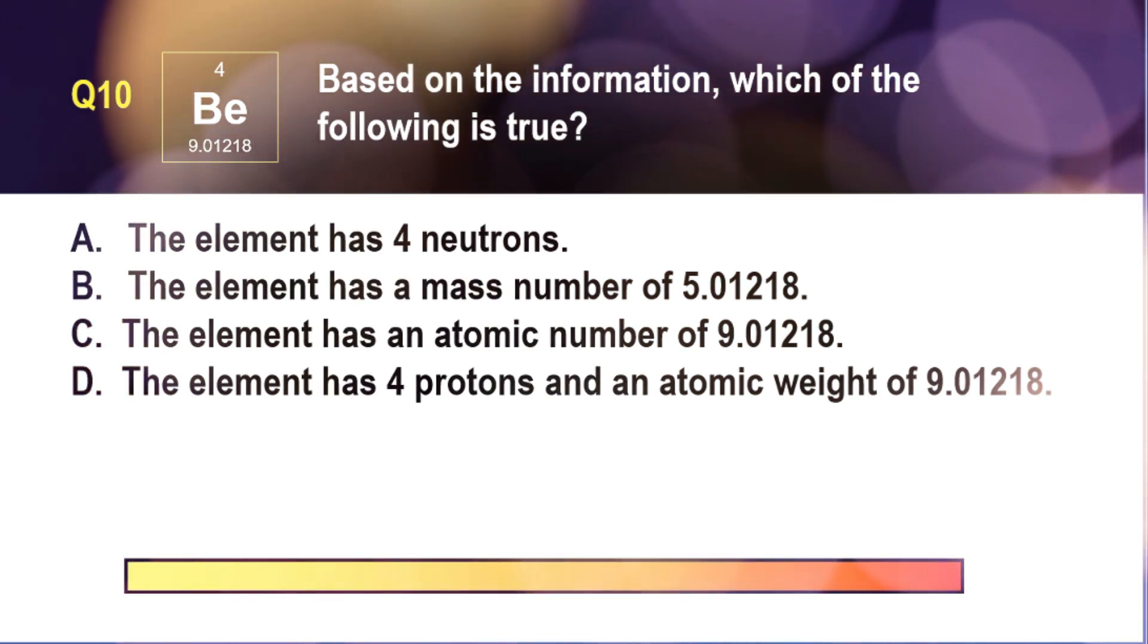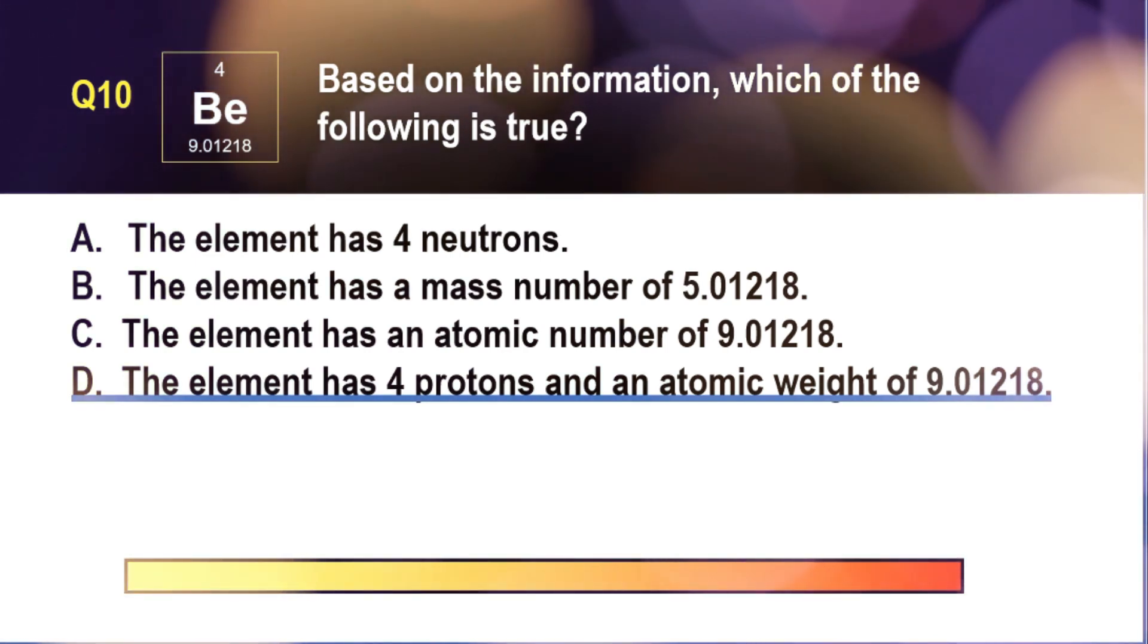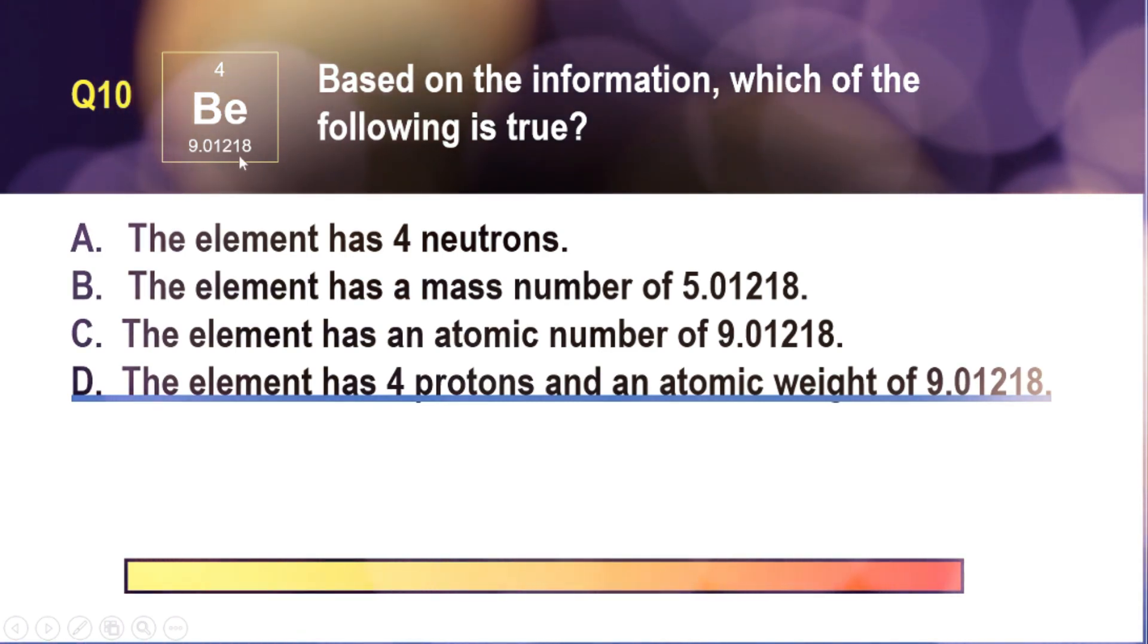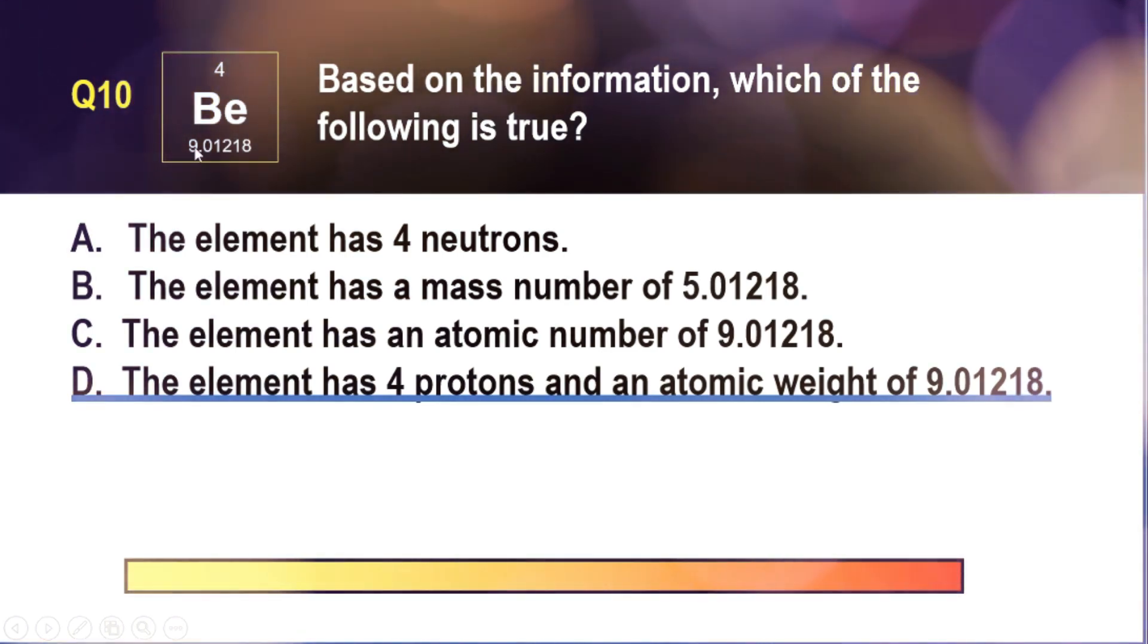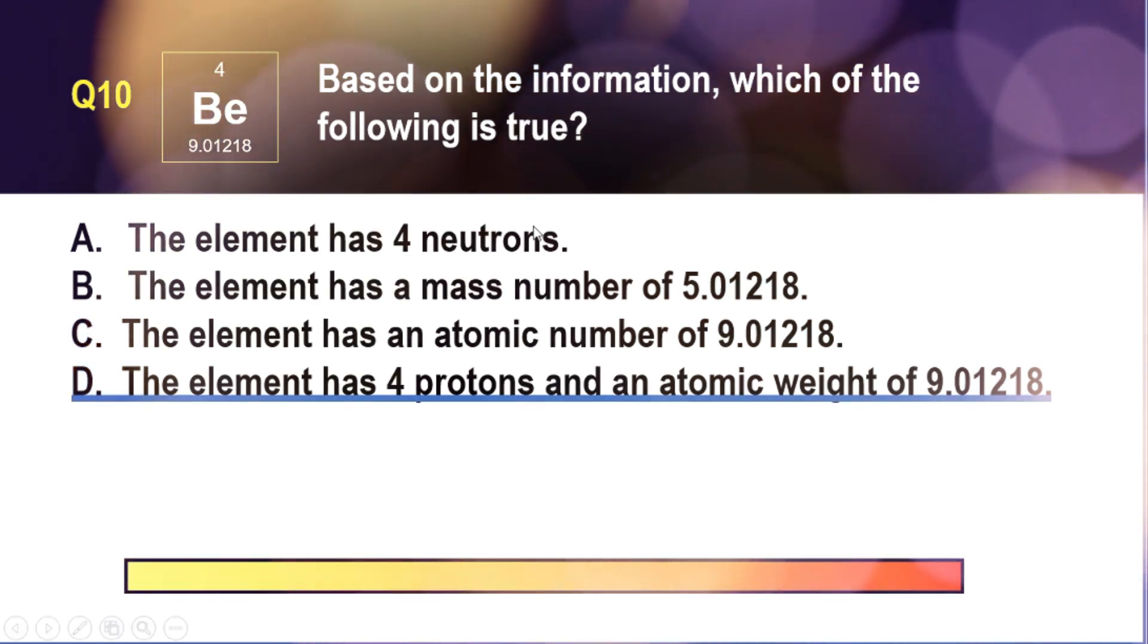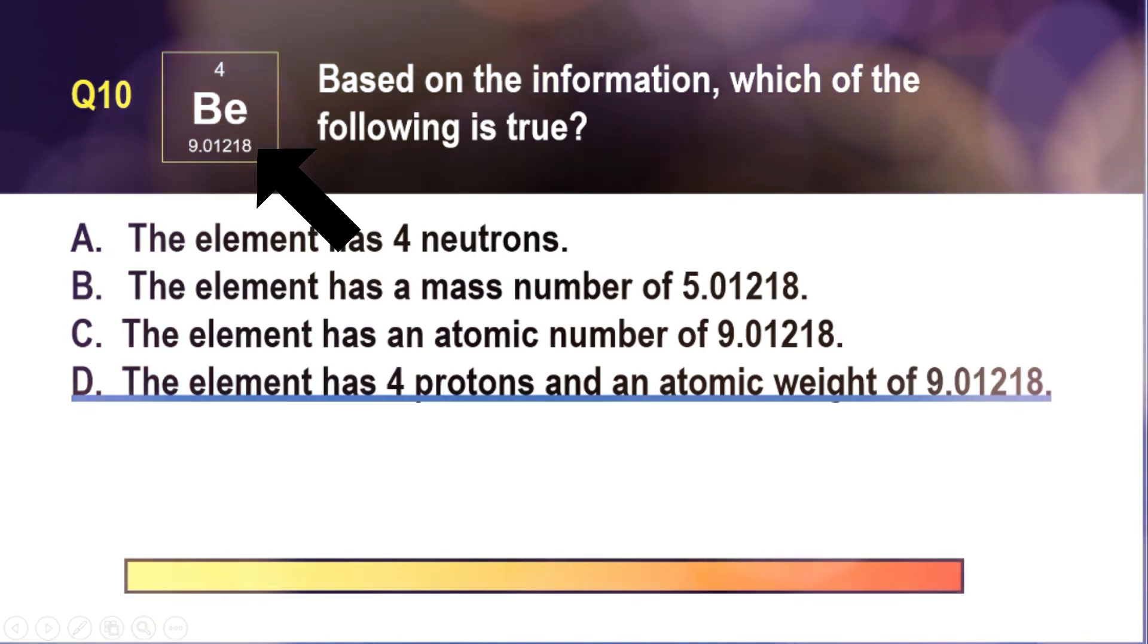The correct answer is letter D. In the given information, we have the element block for beryllium, Be. The smaller number located at the top is the number of protons in the nucleus of all atoms of beryllium. The larger number at the bottom is the average atomic weight of beryllium atoms, taking into account the isotopes.